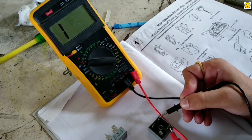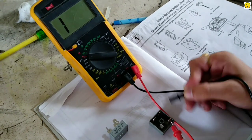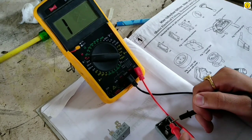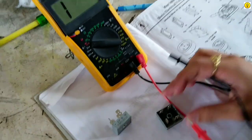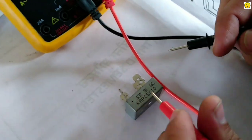By changing the polarity, it again shows continuity. Okay, so this continuity shows that the diode is not in working condition.